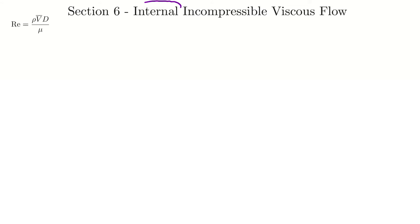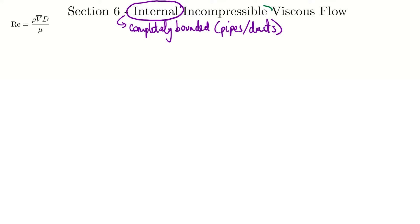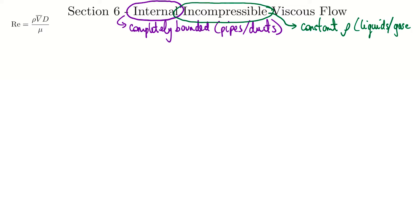Let's break down the title. First, 'internal' refers to flows that are completely bounded by solid surfaces — flows contained within things like pipes and ducts. 'Incompressible' means situations with constant density. In practical terms, that's liquids or gases without a large change in temperature. And now that we've finished section 5, we also check the Mach number — we're incompressible for Mach numbers less than about 0.3, which roughly corresponds to about 100 meters per second. Then there's 'viscous flow.'